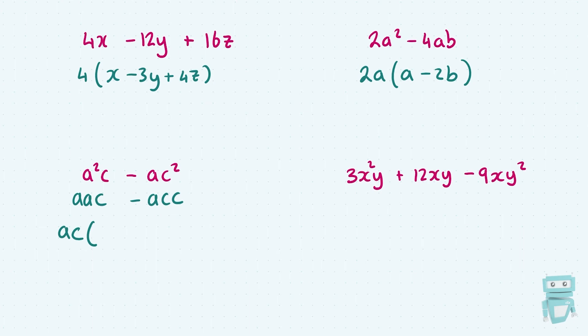If I divide my ac into aac, I'm just left with a. And if I divide my ac into minus acc, I'm just left with minus c. So you can see how that will work. If we divide our ac into a squared c, I get a. And ac into minus ac squared, I get minus c. And if I multiply back out these brackets, I will get the original question out.